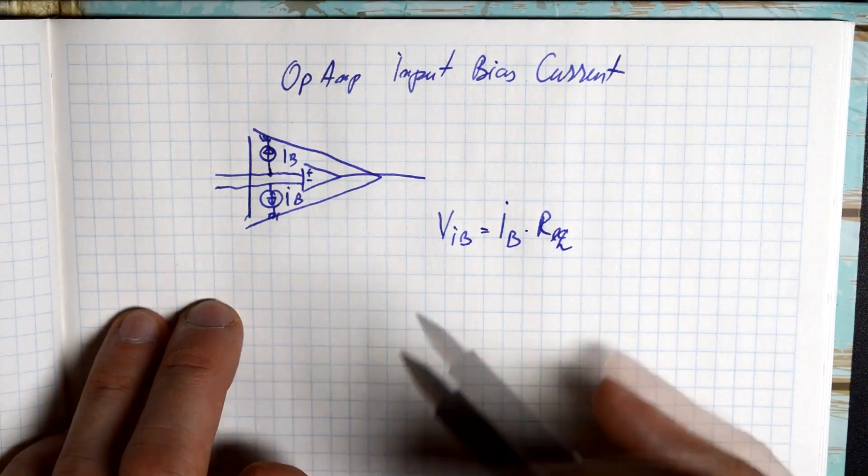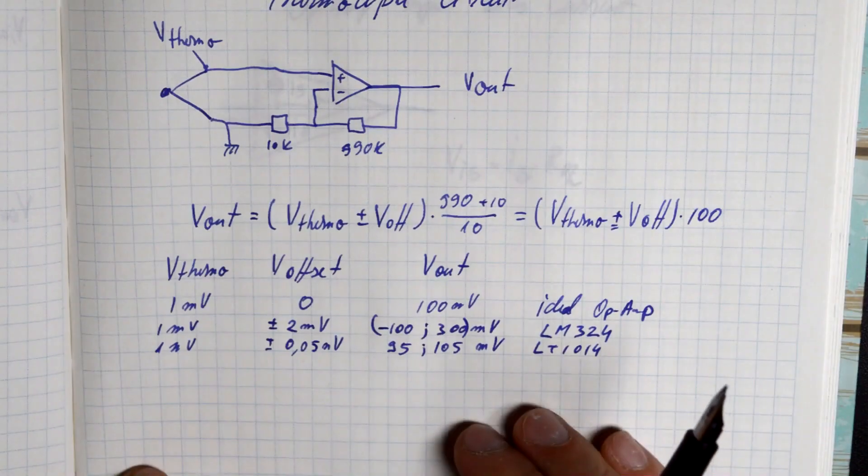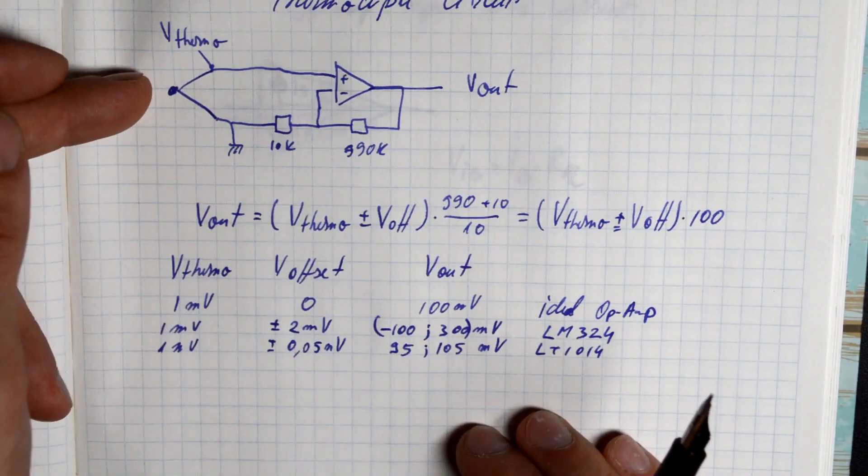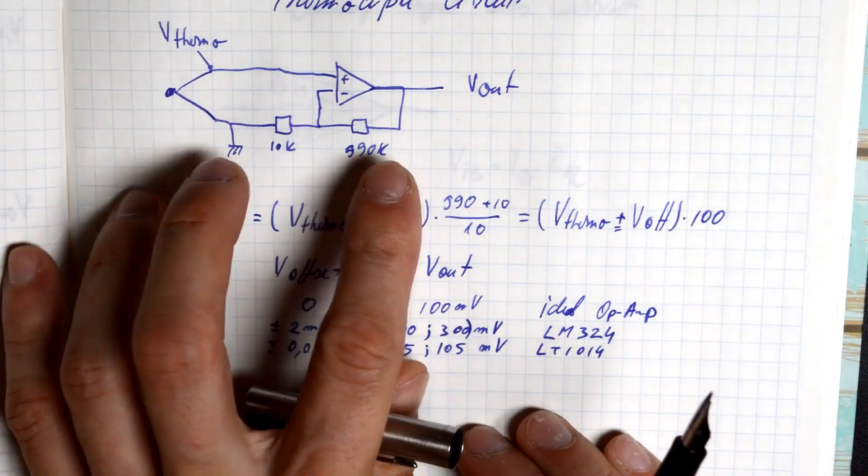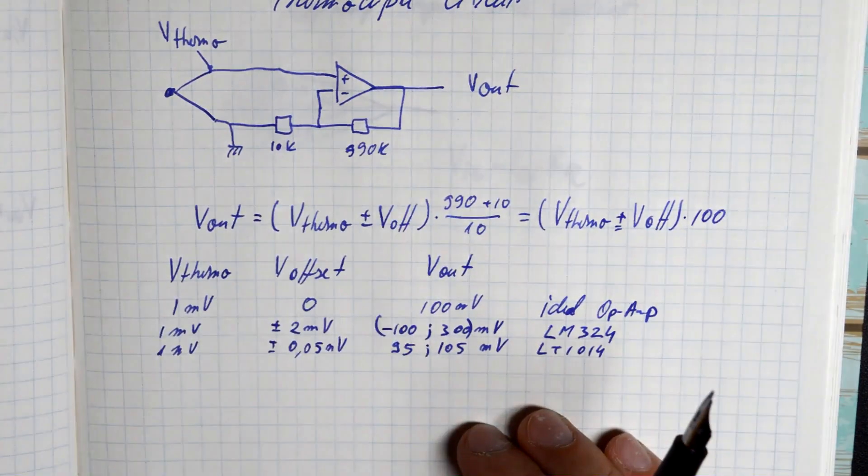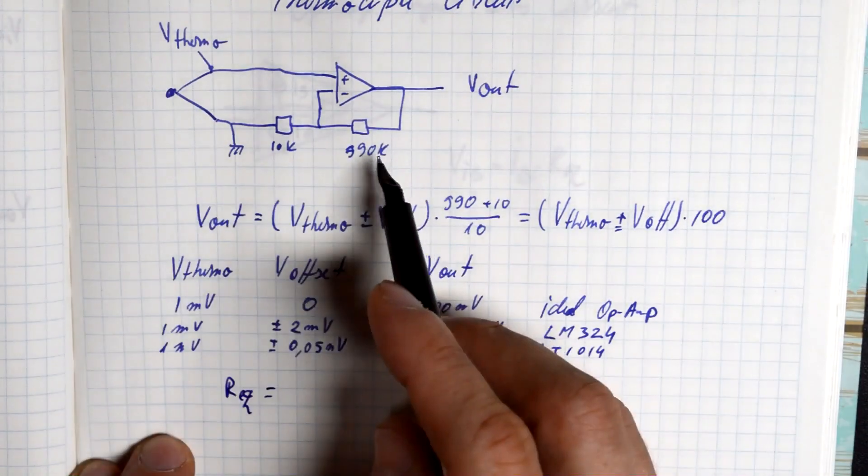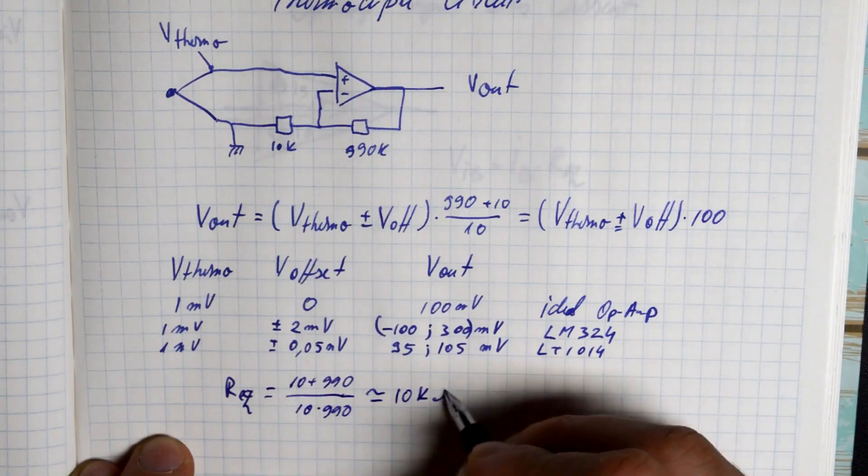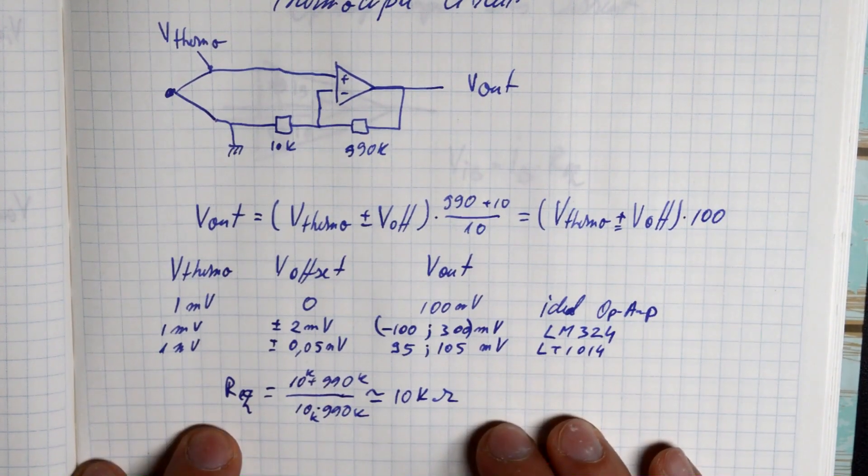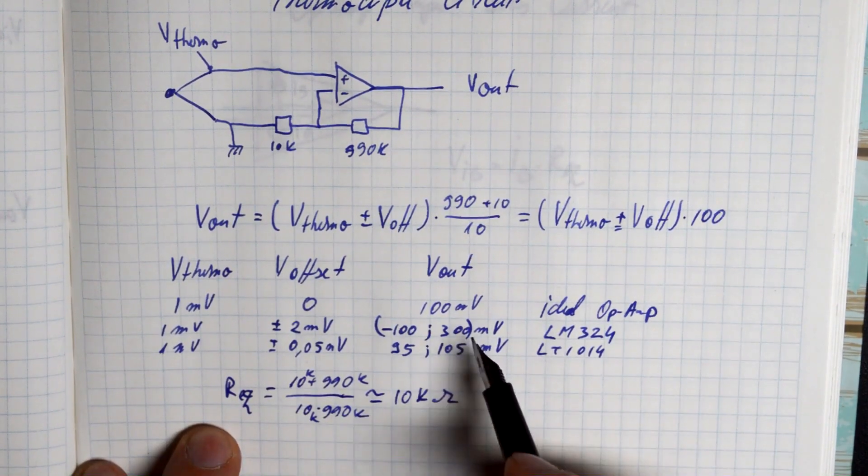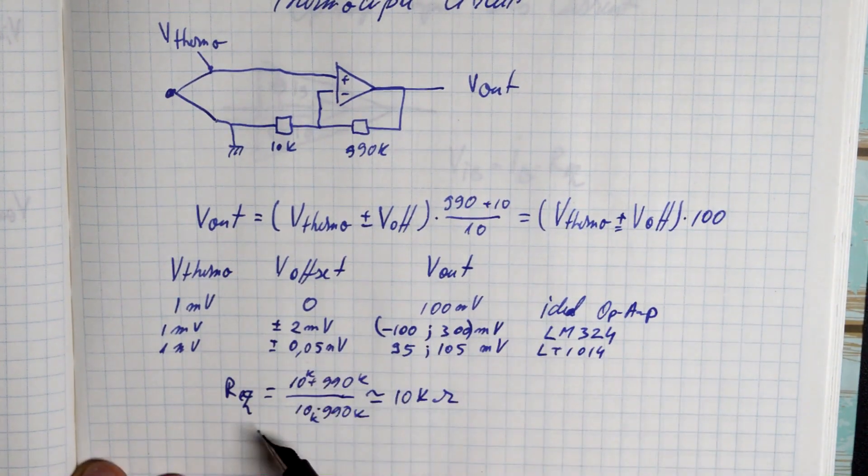So we can calculate the offset caused by our bias current by multiplying the bias current itself with the equivalent resistance on whatever circuit is on the inputs of the op-amp. So let's go back to our previous analysis. By adding this bias current, we basically add some extra voltage on the offset. Now if we look at this bias current on the thermocouple side, it won't really influence us since the equivalent resistance is extremely small. Now what happens on the inverting input side where we got our resistor divider? First of all, we need to determine the equivalent resistance.